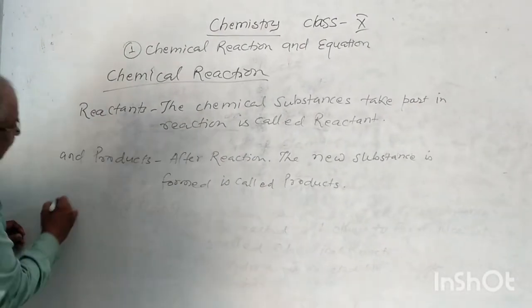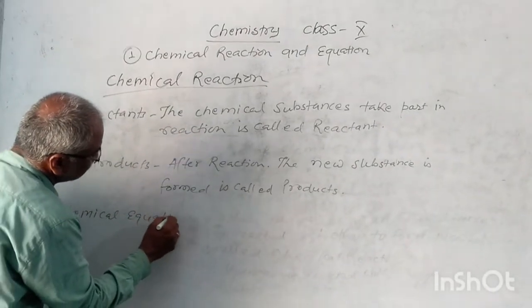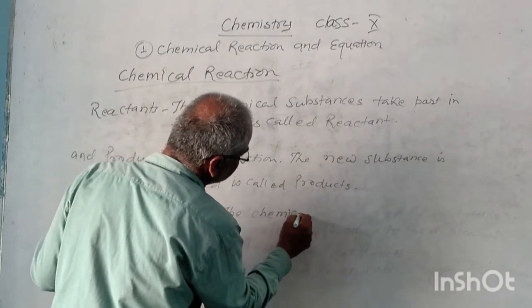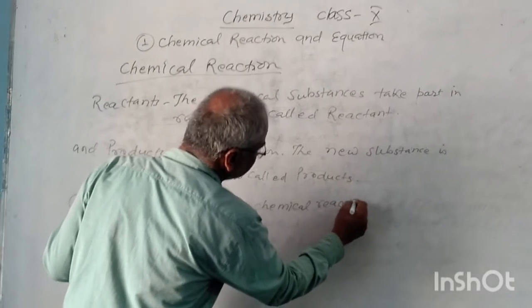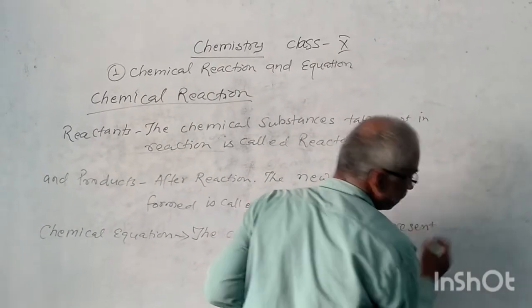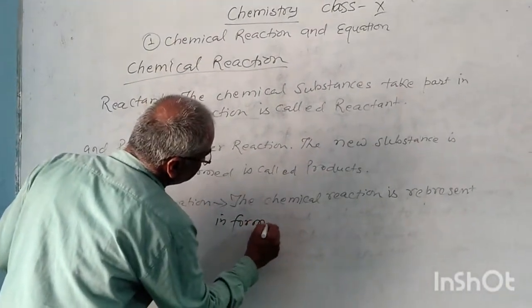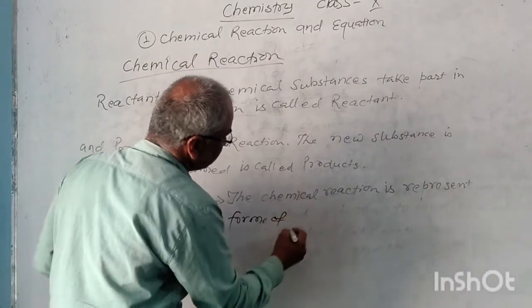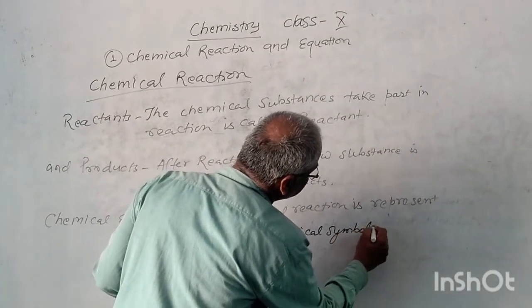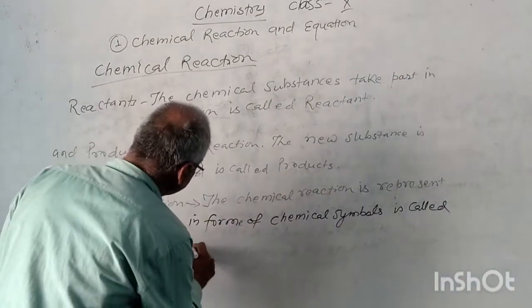Now we study about Chemical Equation. The chemical reaction represented in the form of chemical symbols is called a Chemical Equation.